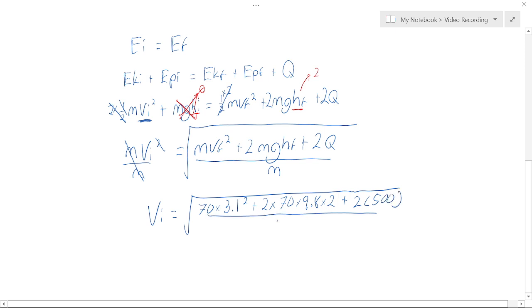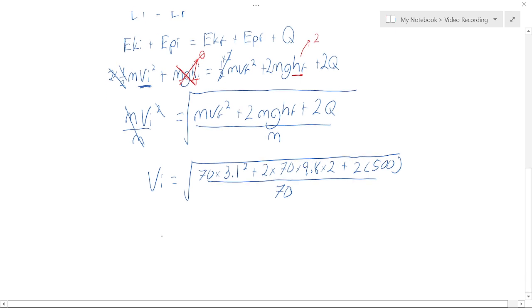Divide everything by mass, which is 70. And we put all of this in our calculator and we find the initial velocity of the skateboarder is 7.9 meters per second.